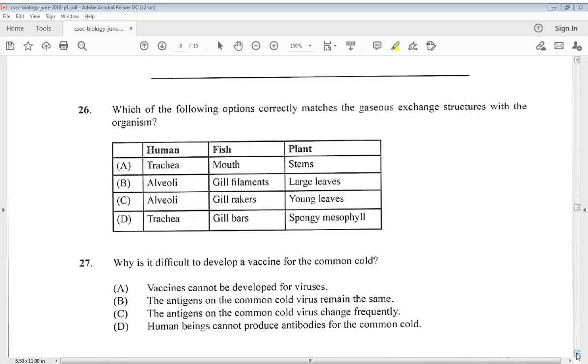26. Which of the following options correctly matches the gaseous exchange structures with the organisms? We have human, fish, plant. The answer for 26 would be B, alveoli, gill filaments, large leaves. 27. Why is it difficult to develop a vaccine for the common cold? We know it would be C. The antigens on the common cold virus change frequently.